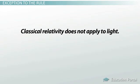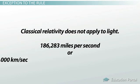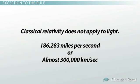Classical relativity does not apply to light, which moves at a speed of 186,283 miles per second. That's almost 300,000 kilometers per second. This velocity is the same regardless of the motion of the source or the observer.